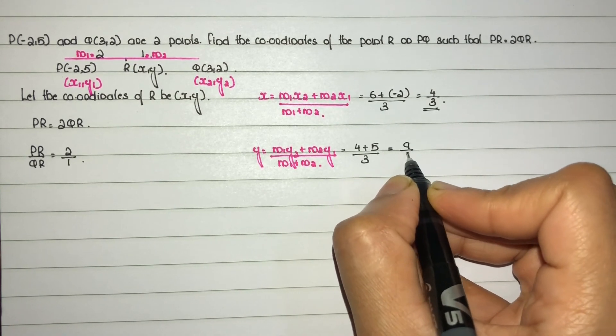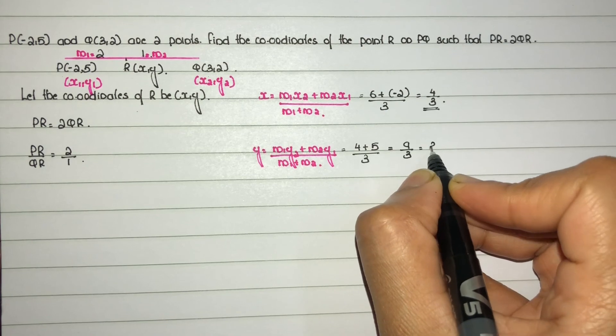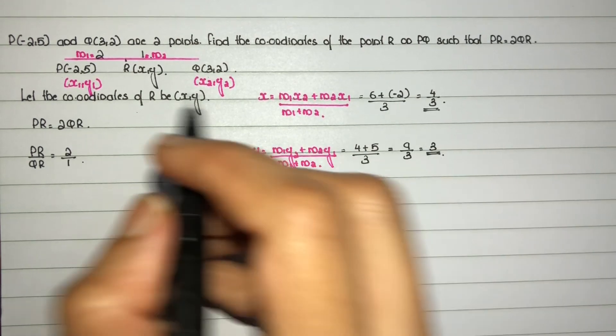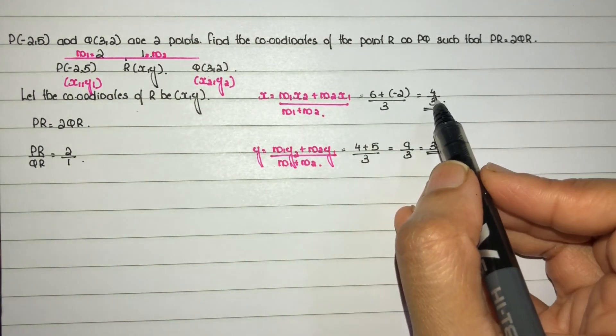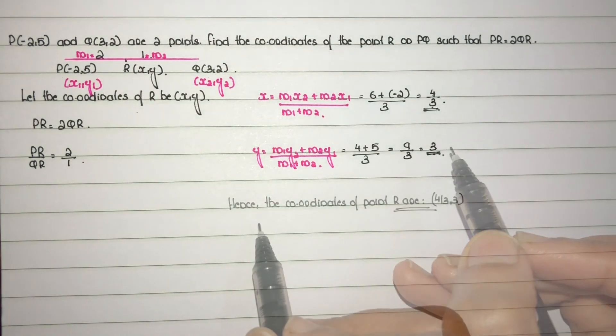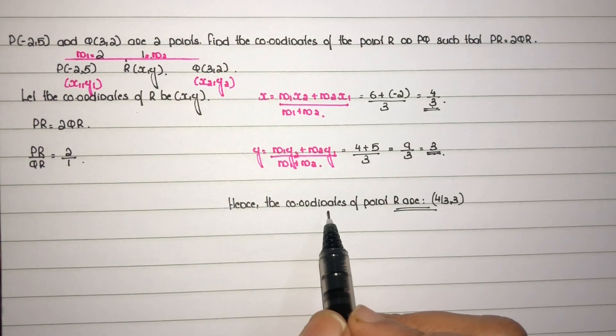Hence, the coordinates of point R are (4/3, 3).